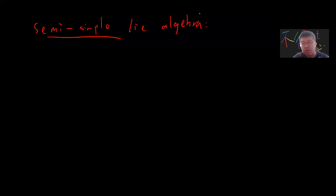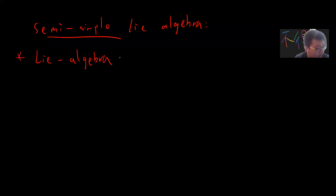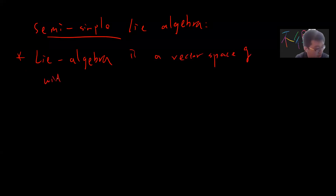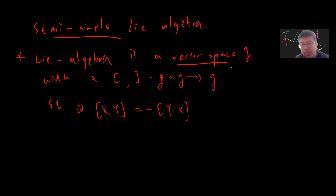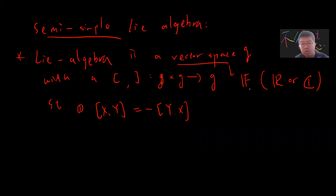This will be a very long series, so let me quickly define the Lie algebra. The Lie algebra is a vector space — let's say G — with a bilinear map, usually written with brackets, from G times G to G. So given two elements in G, you get another element in G. The first property is that the bracket [x, y] equals minus [y, x]. Remember this is a vector space over a field F, usually the real or complex numbers, so this minus sign is the inverse element of one in this field.